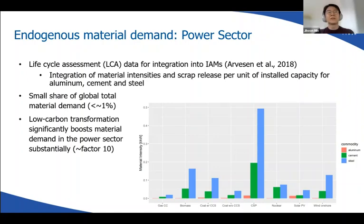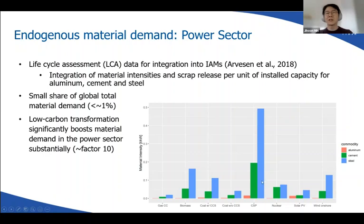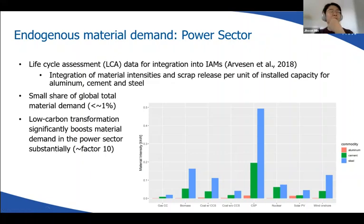For the power sector, this is linked in an endogenous manner. The power sector dynamics of construction and retirement of power plants are linked with material intensities and scrap release per unit of installed capacity. As of now, the share of material demand from the power sector is pretty low, but the relative material intensity is higher for lower-carbon options — wind, CSP, and CCS all have higher intensities, so we expect higher material implications as we move toward a low-carbon economy.